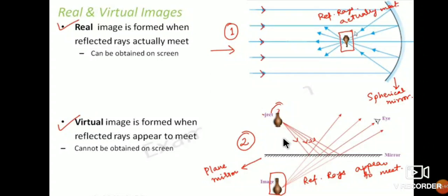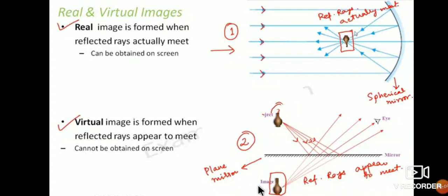A virtual image is formed when reflected rays appear to meet — this happens in a plane mirror. So in a plane mirror, a virtual image is formed, and this virtual image cannot be obtained on a screen. This is a very important concept: in a plane mirror, the image formed is virtual and cannot be obtained on a screen.